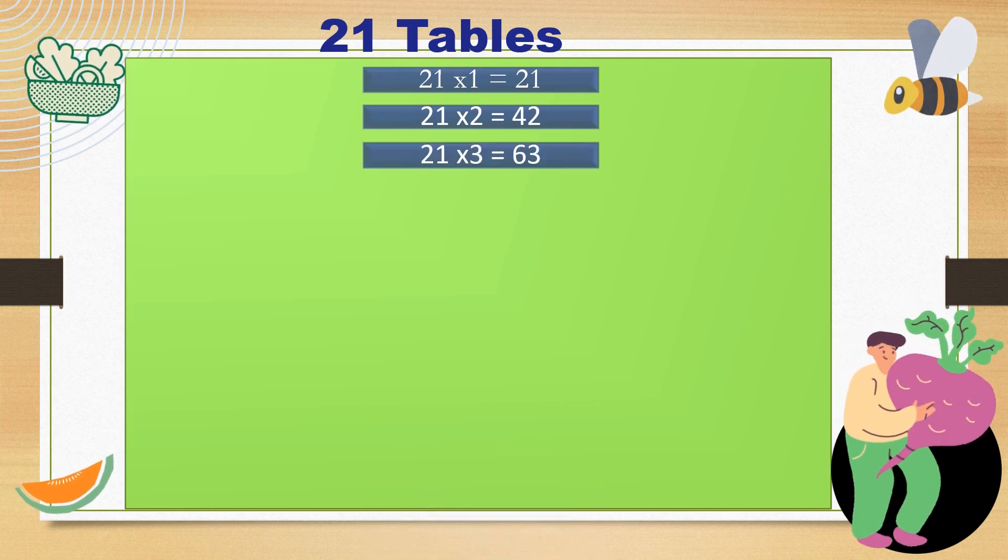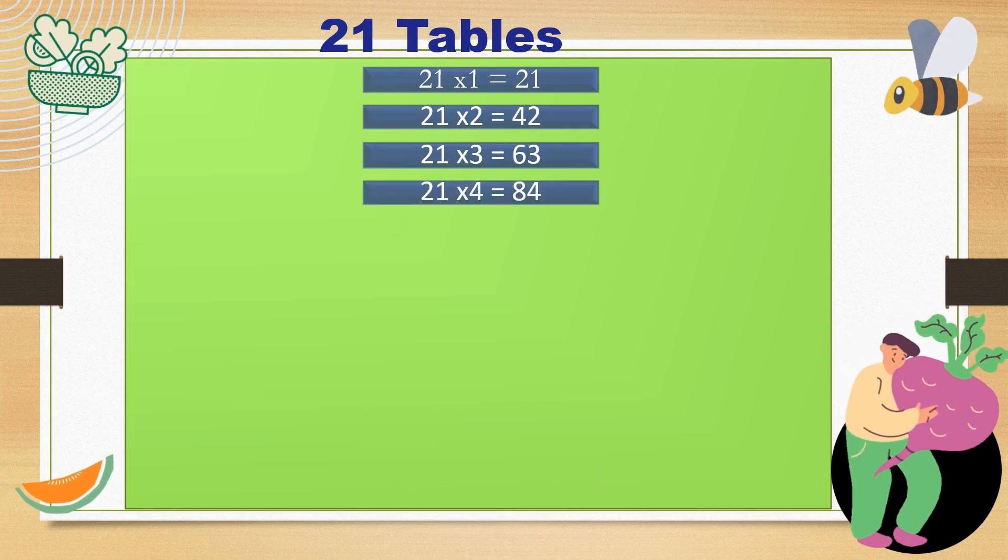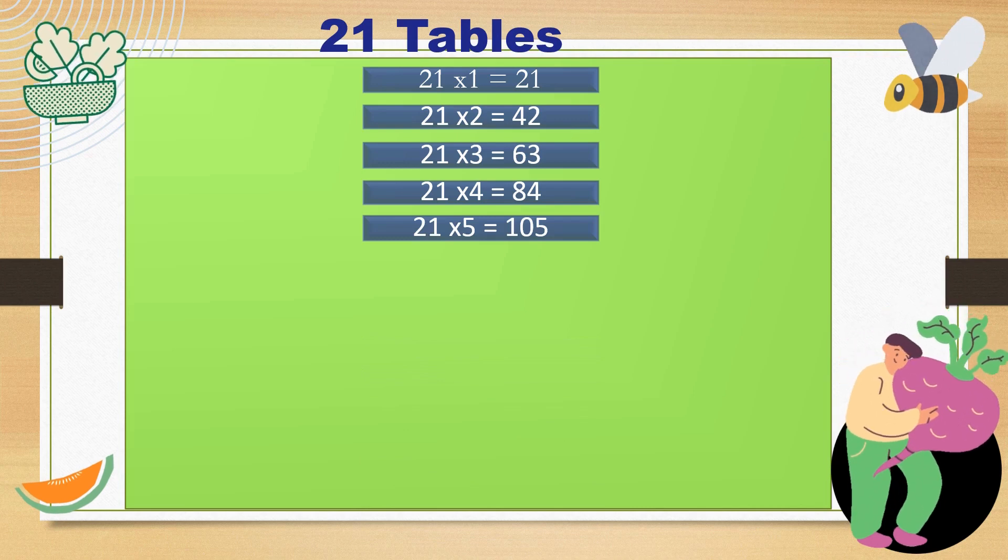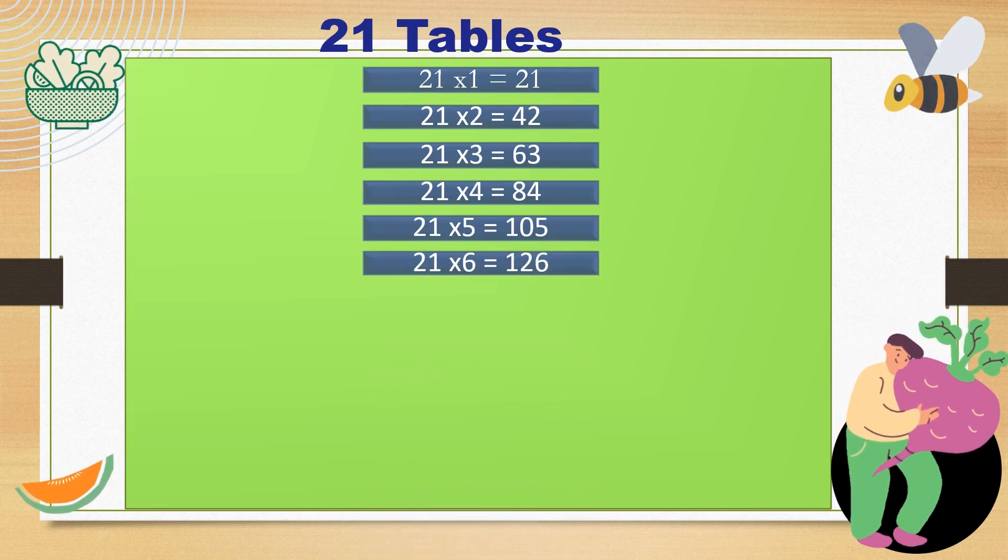21 times 2 is 42. With each number, there's something new to view. 21 times 3 is 63. Like the beats of a song, in harmony. 21 times 4 is 84.